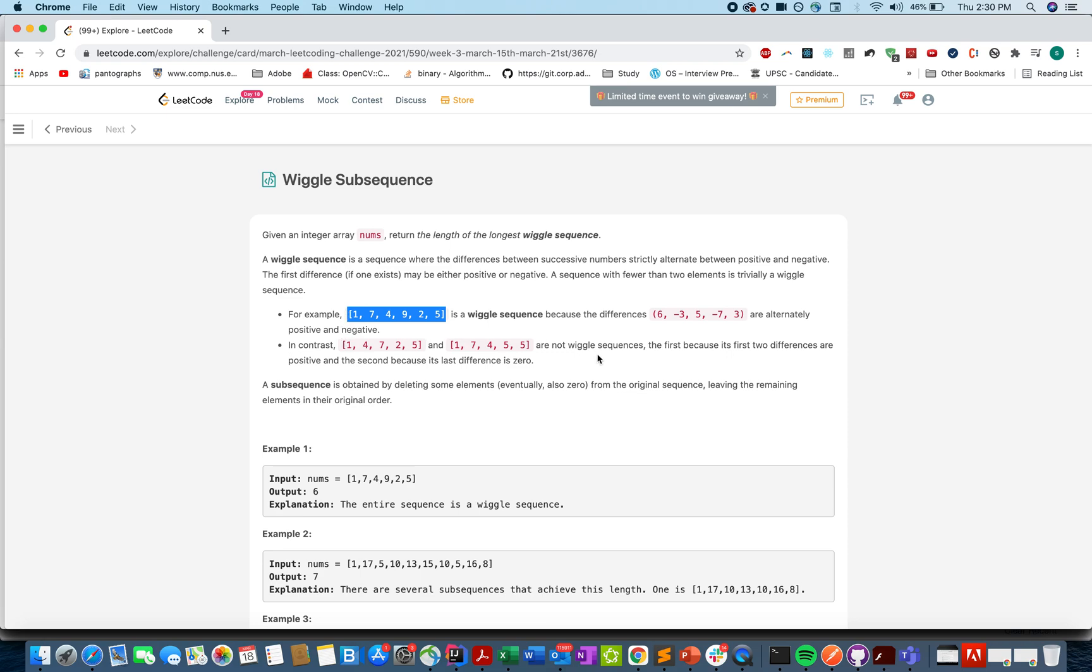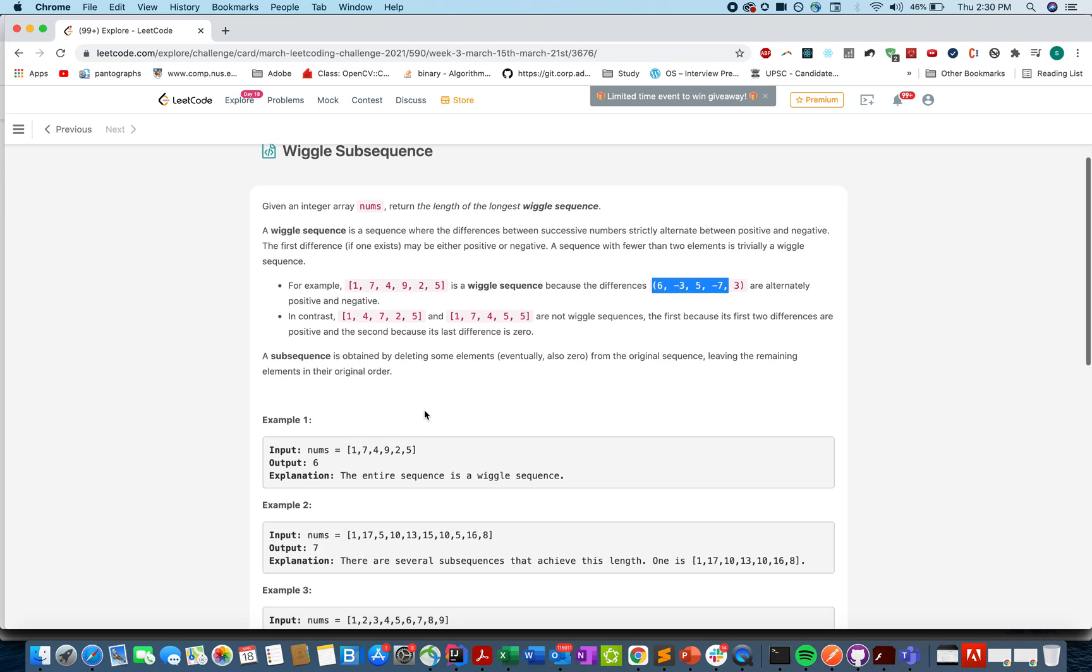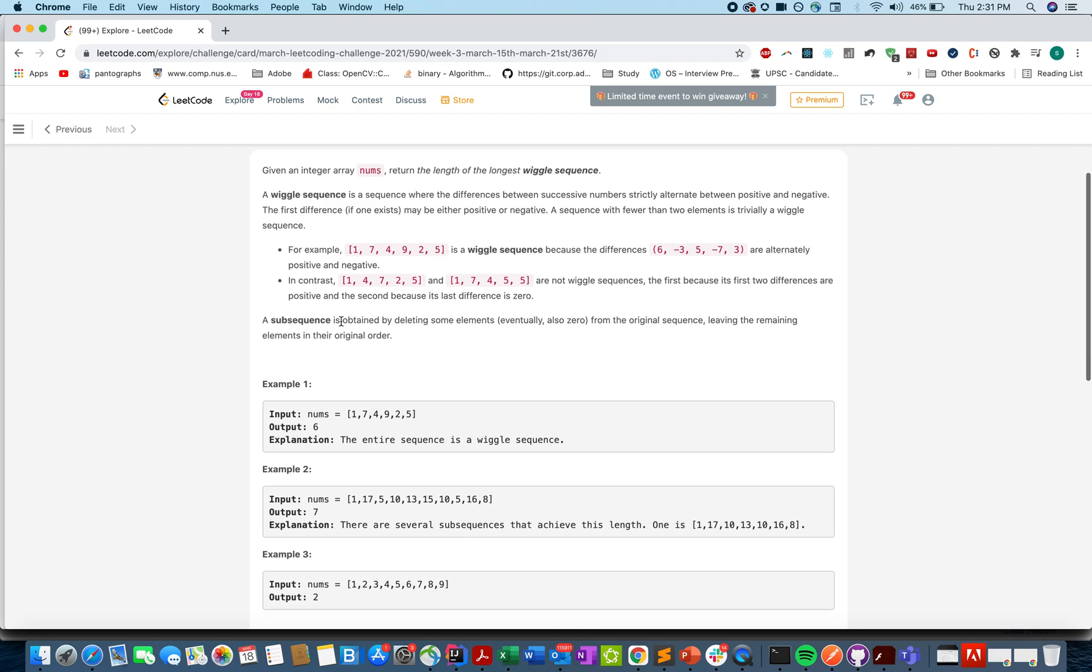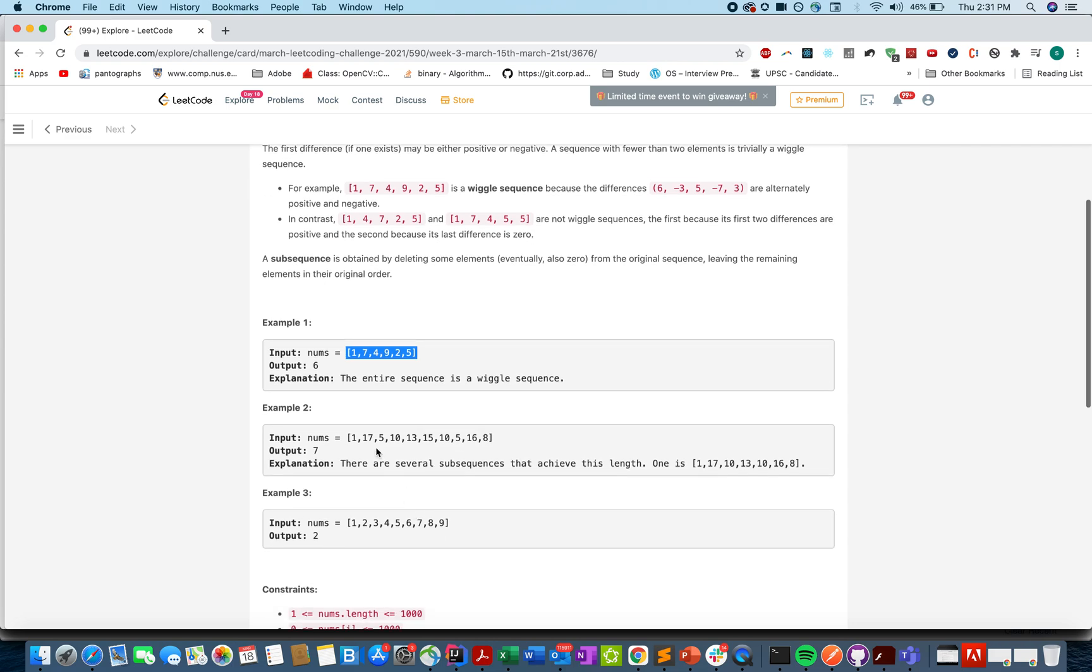Since the difference alternates between positive and negative, up, down, up, down. In contrast, sequences like 1, 4, 7, 2, 5 and 1, 7, 4, 5, 5 are not wiggle sequences. What we are interested in is the longest subsequence, not substring, that can be obtained from this string.